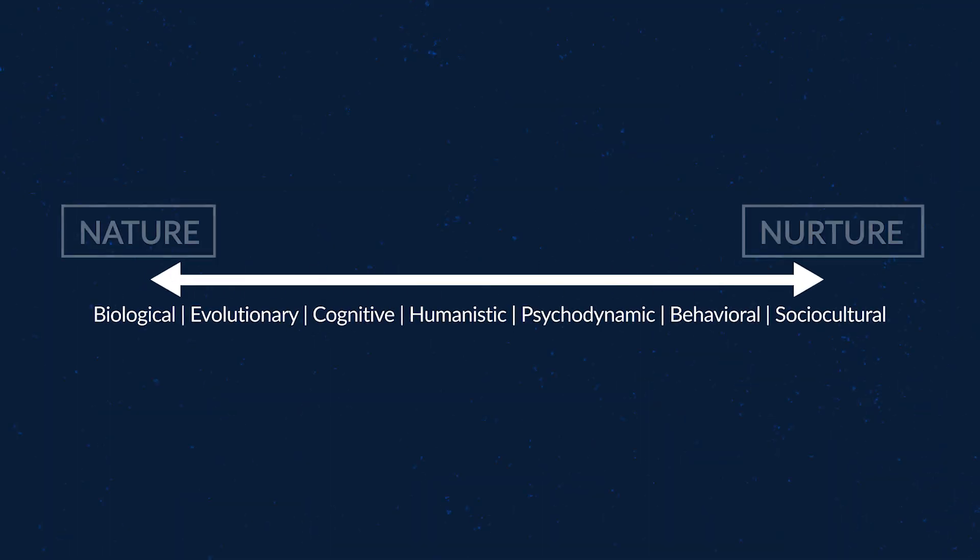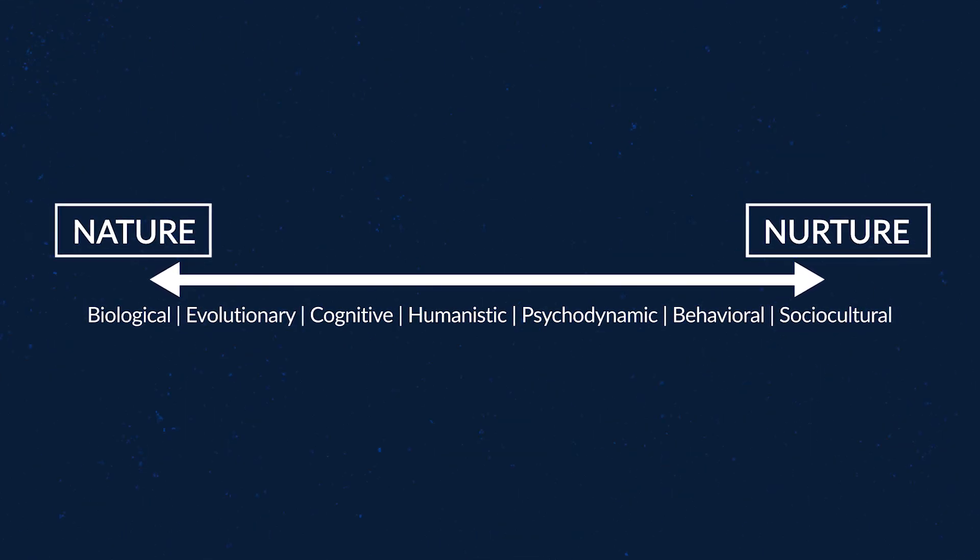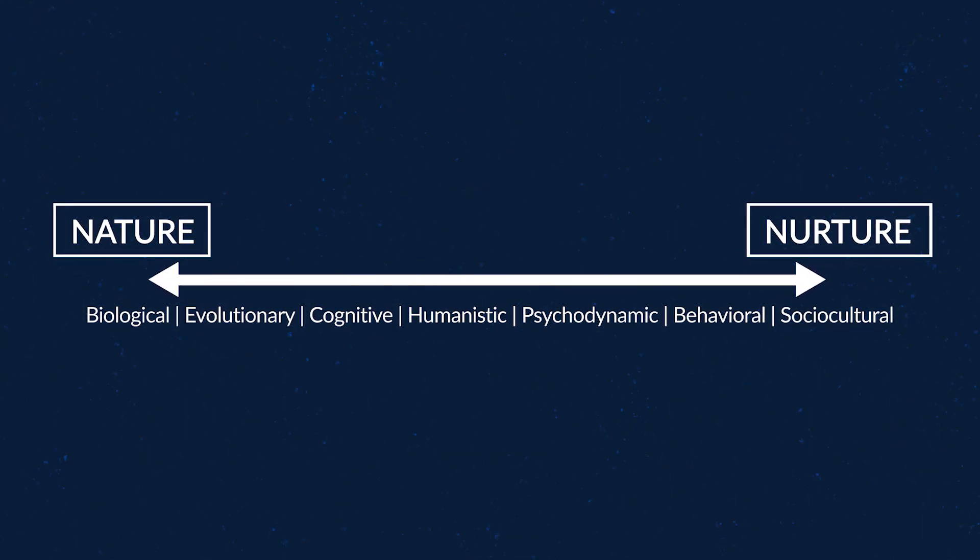Charles Darwin was one of the creators of the theory of evolution, which states that evolution happens by natural selection. In psychology, this theory became the foundation for the evolutionary approach — another topic from our Unit 1 Topic 1 video. Essentially, Darwin believed that humans and animals would pass on specific traits that helped them survive; traits that did not help the species survive would die off. We can see where different psychological perspectives stand on the spectrum of this debate.